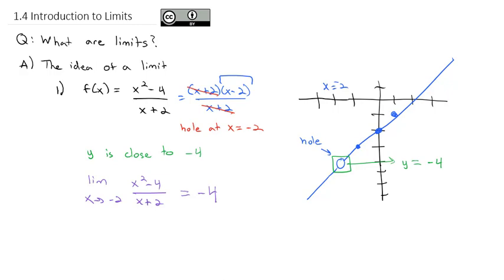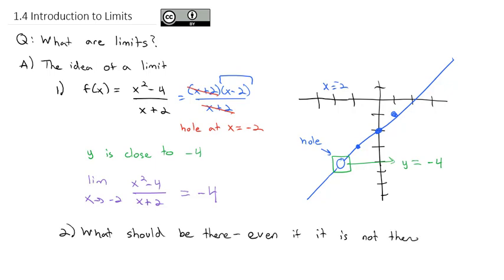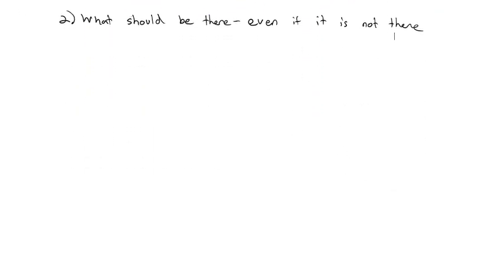Another way to think about the limit is it's the value of what should be there, even if it is not there. Looking at our graph in the green box, there should be a y-coordinate of -4 even if there's not a point there. That's what a limit is — what should be there, what is it getting close to, even if it's not there?